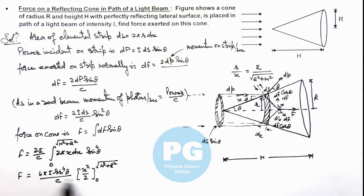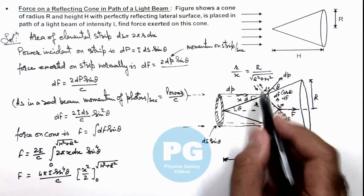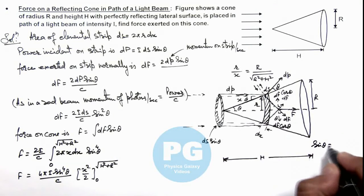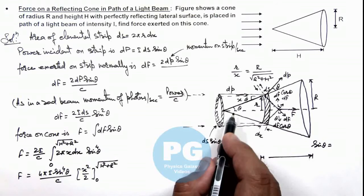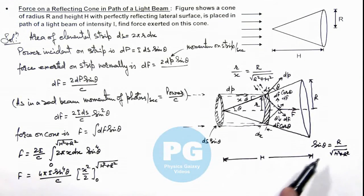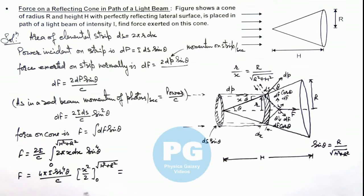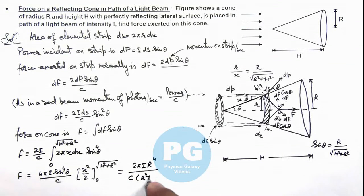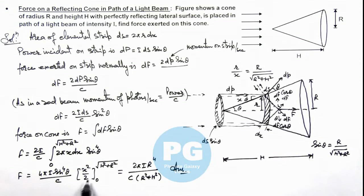We can also substitute the value of sinθ here. sinθ = R / √(h² + R²). Substituting all values, the final result we are getting is F = 2πIR⁴ / [c·(R² + h²)]. This is the final result of the problem. Due to limitation of space, the full calculation part is left for you to execute and verify the final result.